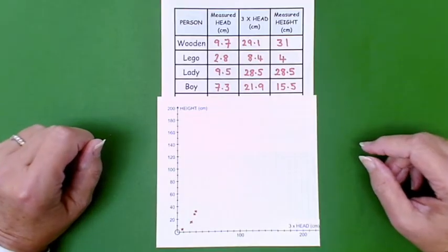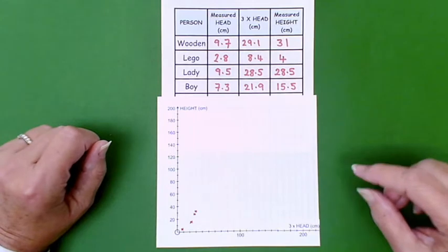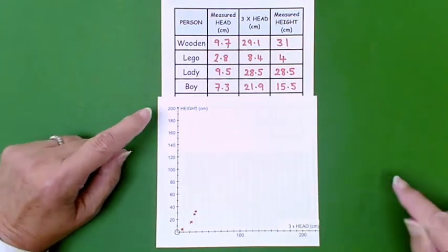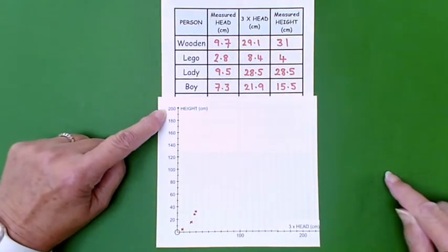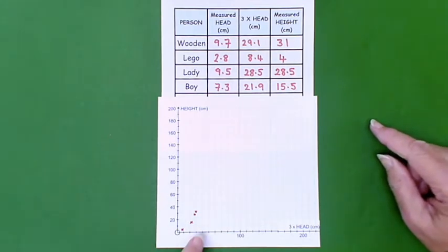Here is the data represented graphically with axes of three times around your head and the measured height. This is a very small sample of data using any representations of people.